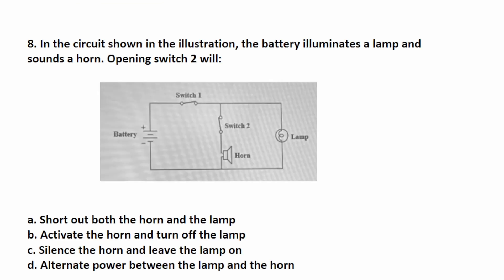Number eight says, in the circuit shown in the illustration, the battery illuminates the lamp and sounds a horn. Opening switch two will. To answer this one, you first have to know that electricity flows from positive to negative. Here's the positive side of the battery. So we have electricity flowing this way.